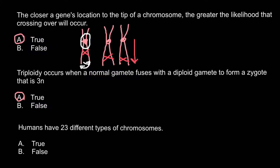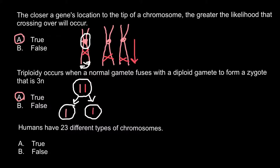Imagine that we have a model organism with only two chromosomes — one chromosome and another homologous chromosome in a different color. When this diploid organism undergoes meiosis, it would produce two types of gametes: one type would contain one chromosome and the other type would contain the other chromosome. So gametes would be haploid and the organism is diploid.